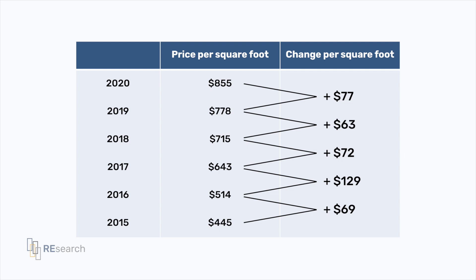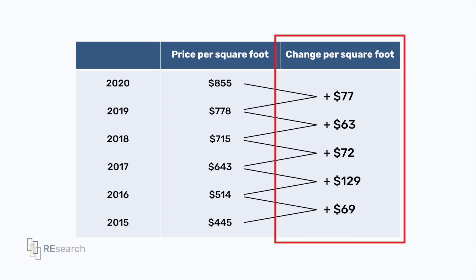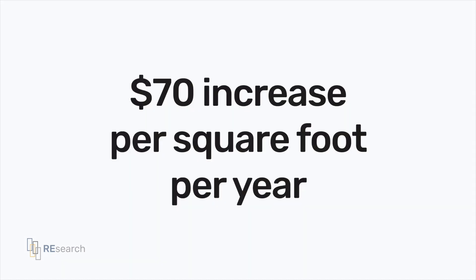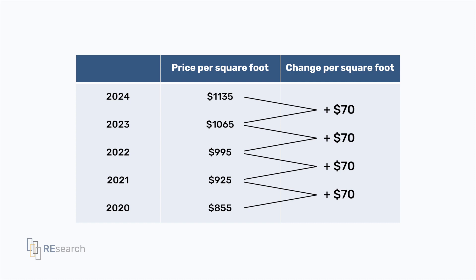Using the values and trends data on Condos.ca, here are the average prices per square foot in the last five years in the Mimico neighborhood and the calculated change year over year. I take the average of the increase or decrease and use that to project the increase per square foot per year. There is a statistical outlier in 2017, so because I like to be ultra conservative with my projections in order to manage expectations, I exclude this outlier and use the resulting $70 increase per square foot per year. The outlier would have increased the average to $102 per square foot per year.